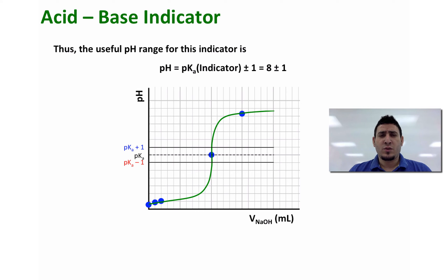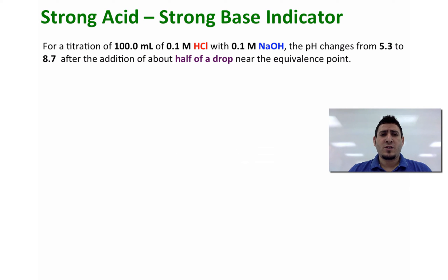Now this is very important when you are determining which indicator you can use for your titration. For a titration of 100 milliliters of 0.1 molar hydrochloric acid, which is a strong acid, with 0.1 molar sodium hydroxide, which is a strong base, the pH changes from 5.3 to 8.7 after the addition of about half a drop near the equivalence point.